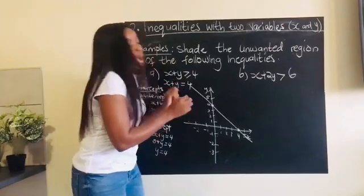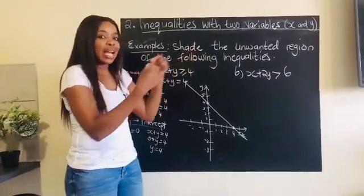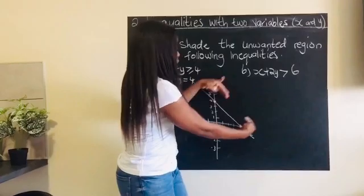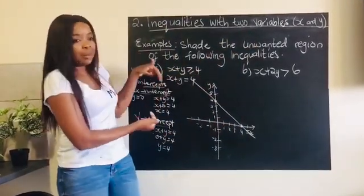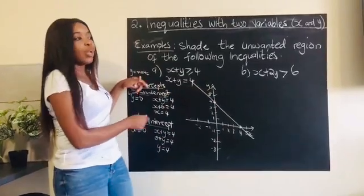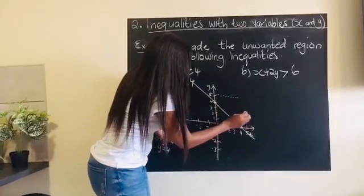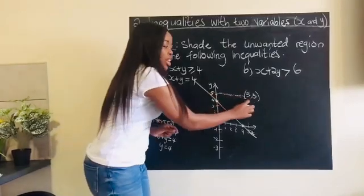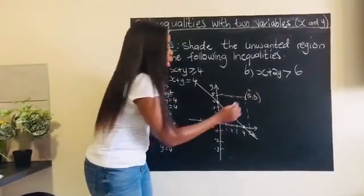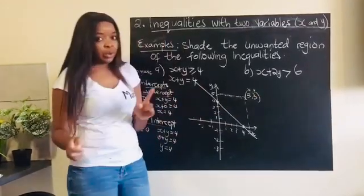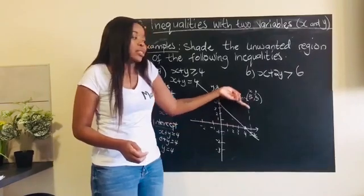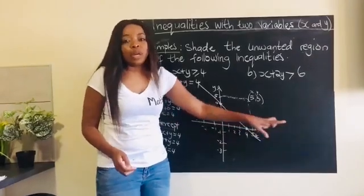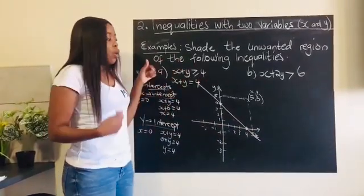We now want to see which part to call our unwanted region — which we are going to shade. One way is to select a point on either side of my line. I'm going to choose the point (5, 5) — that's a random point on one side of the line. Remember your coordinates: the first number is your x value and the second is your y value. I could have chosen (4, 5) or any point on that side.